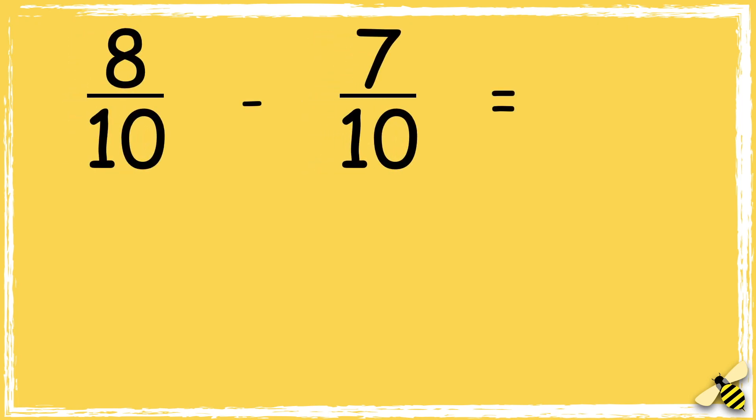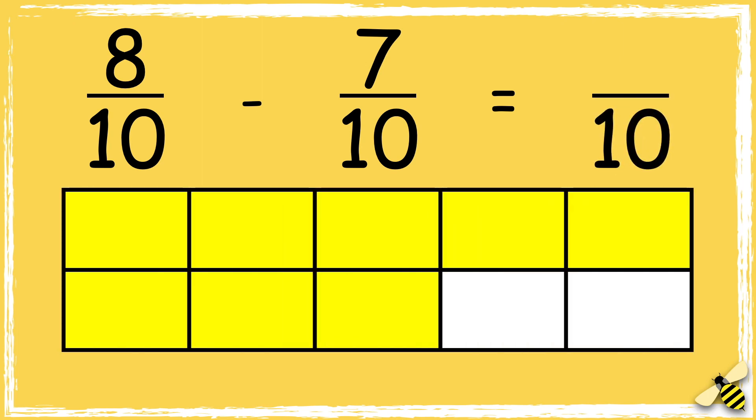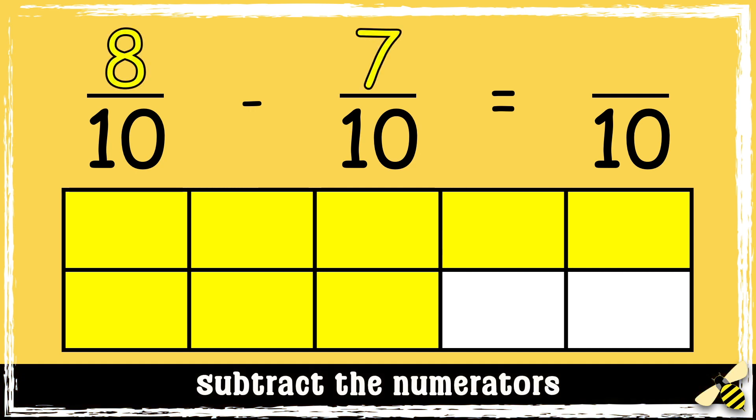Let's have a look at another one. 8 tenths take away 7 tenths. So remember the denominator stays the same. So we need to subtract the numerators.